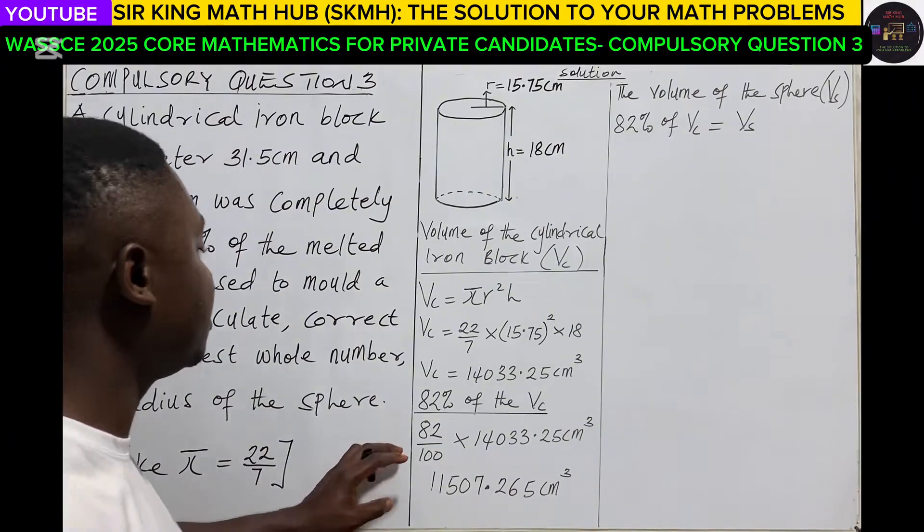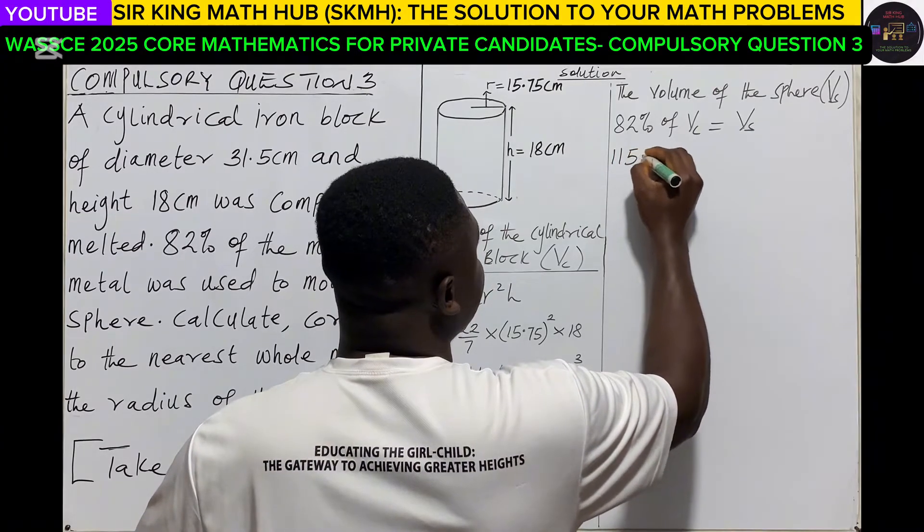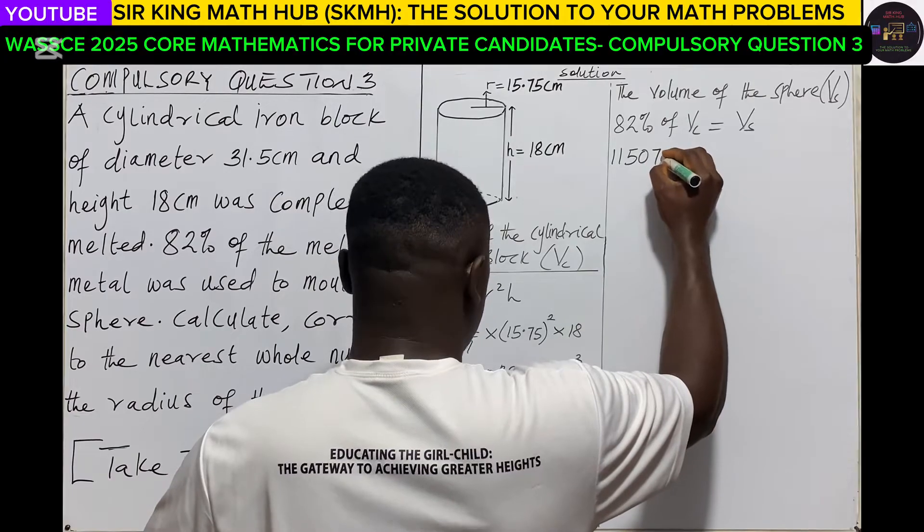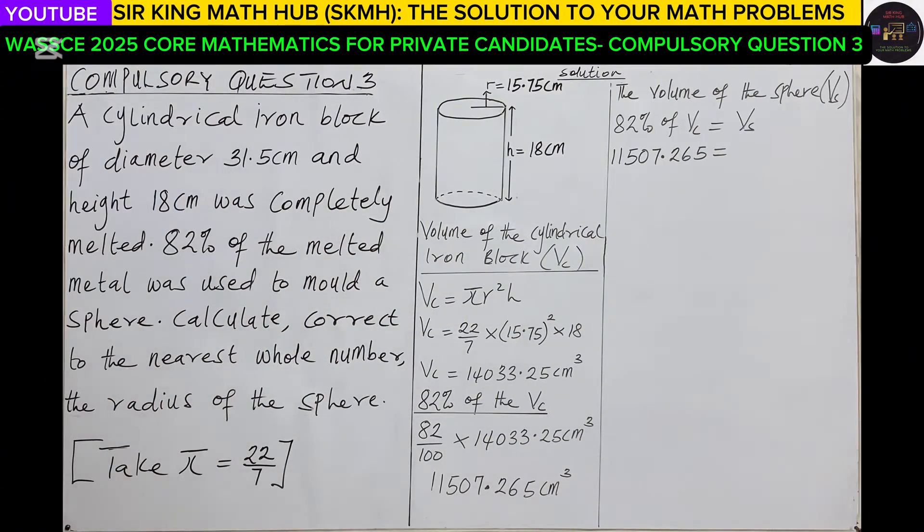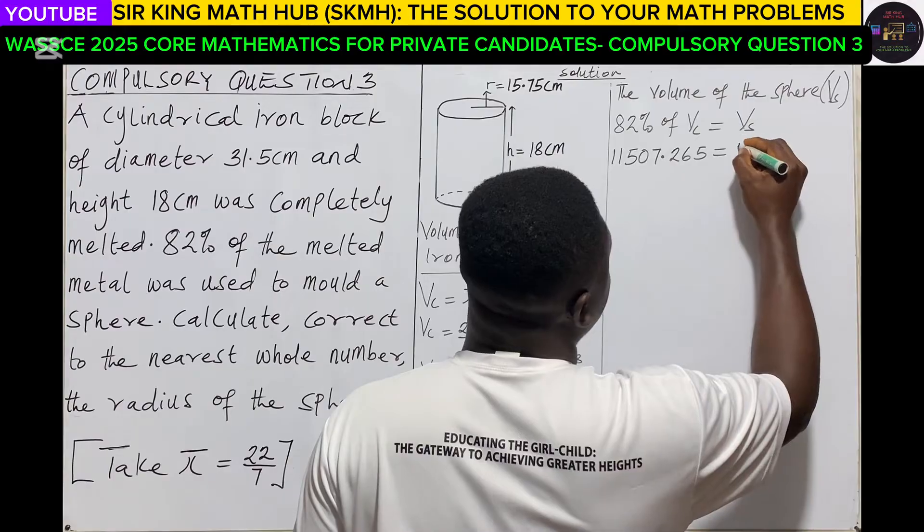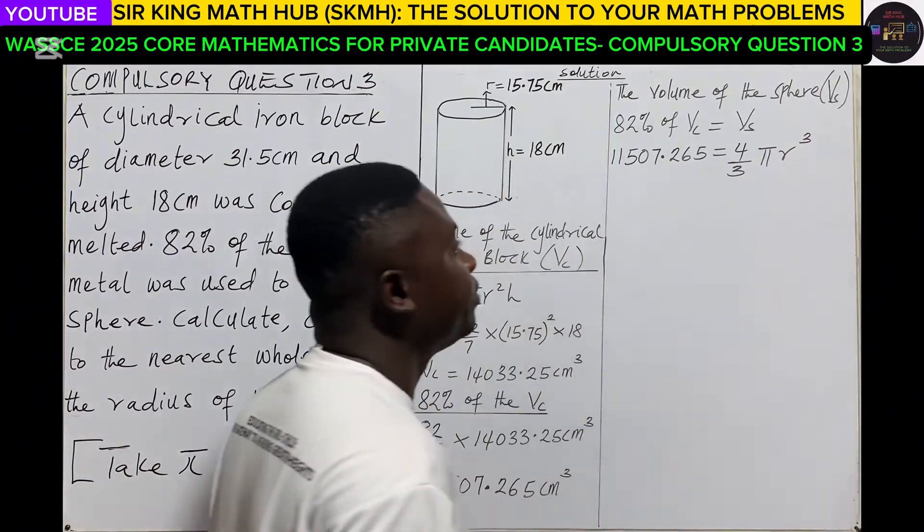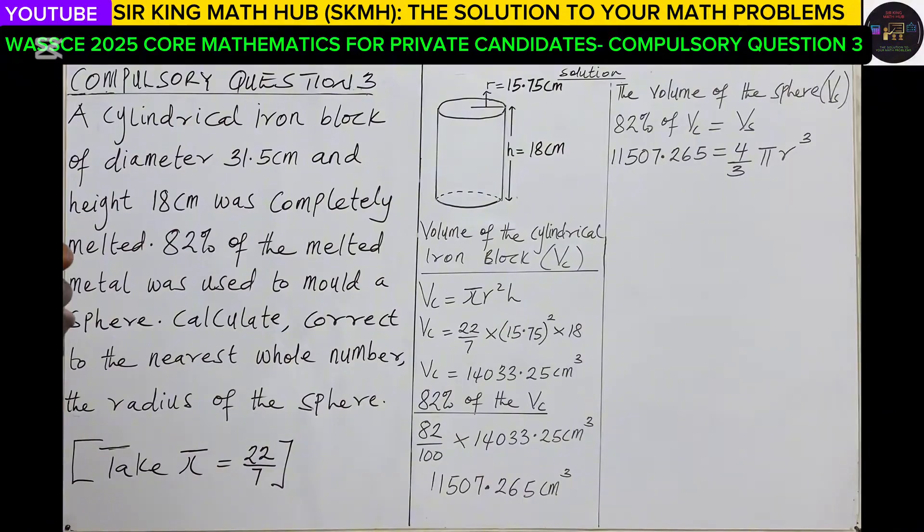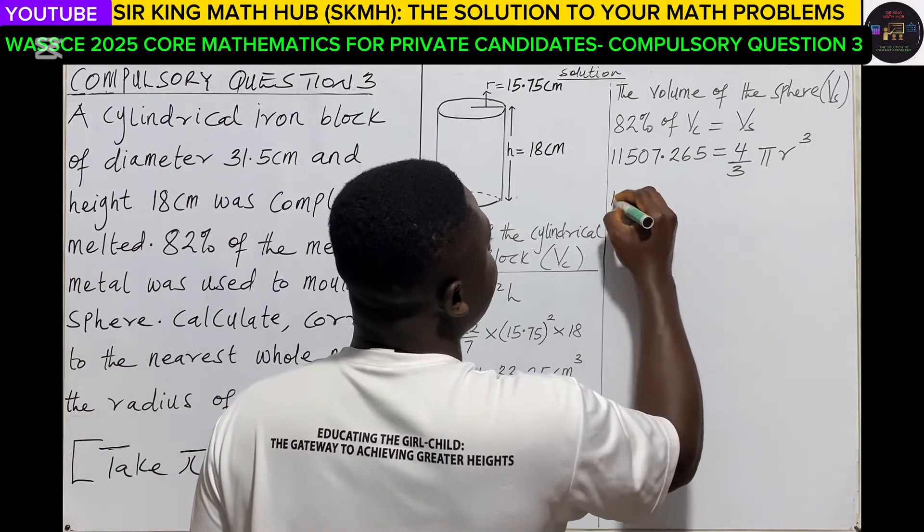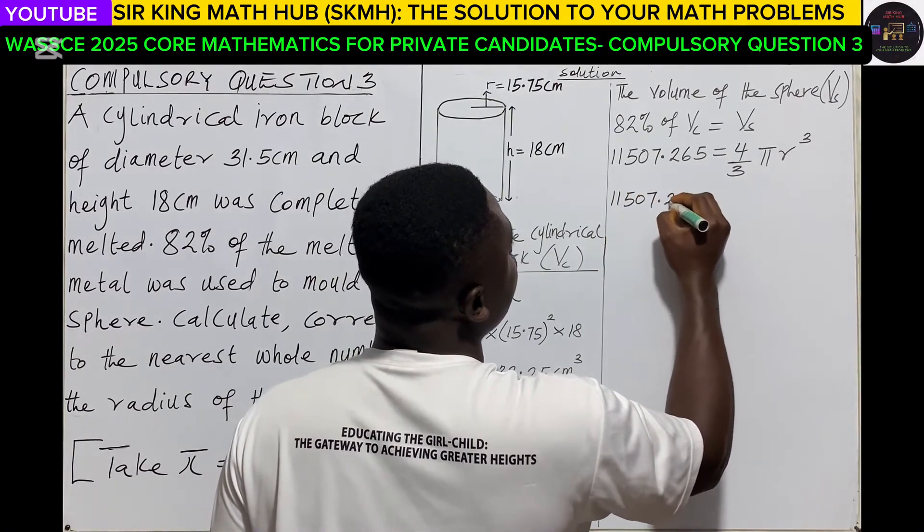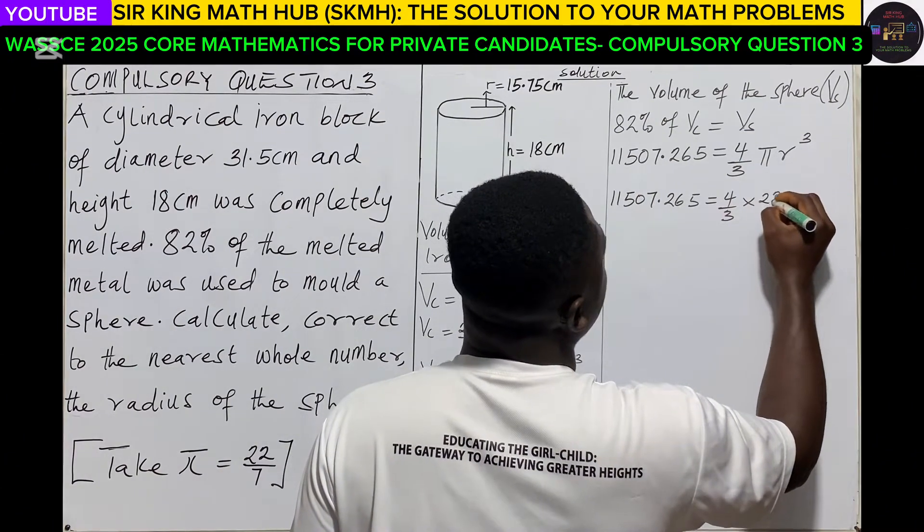Now with the 82% of the original volume, we had 11507.265. And what is the formula for calculating the volume of a sphere? The volume of the sphere is given as 4/3 π r³.